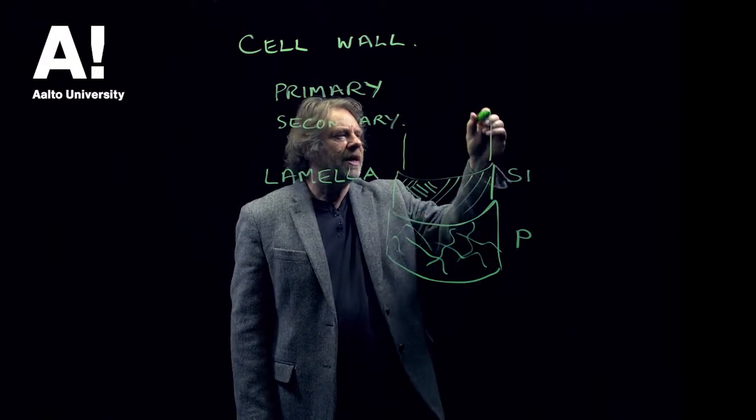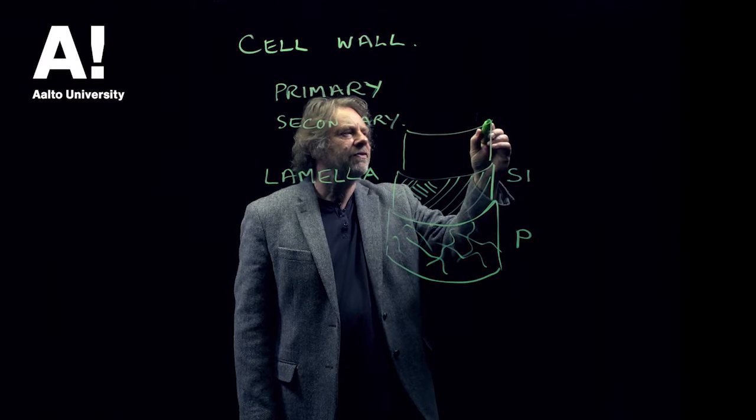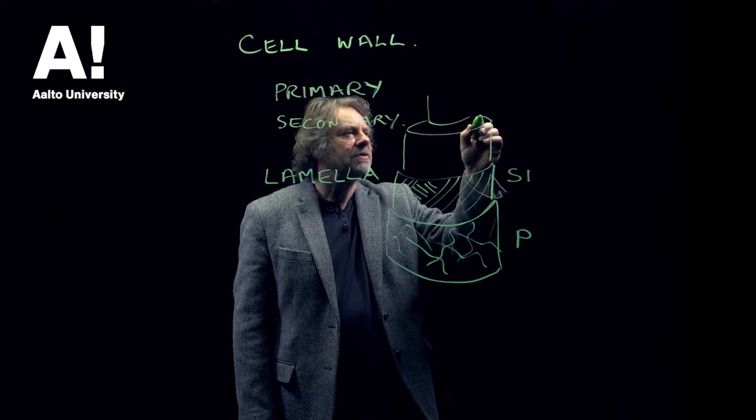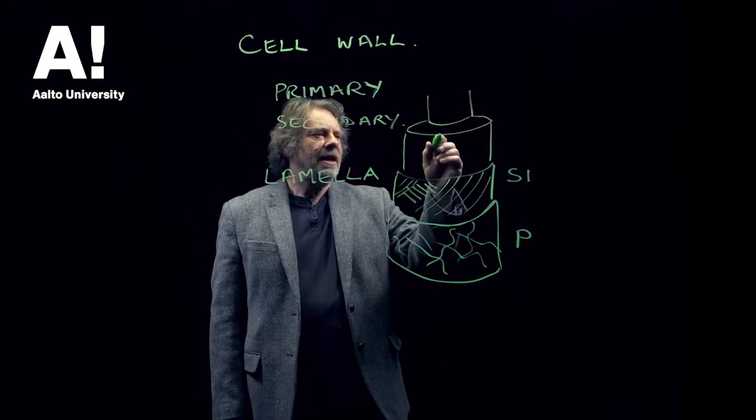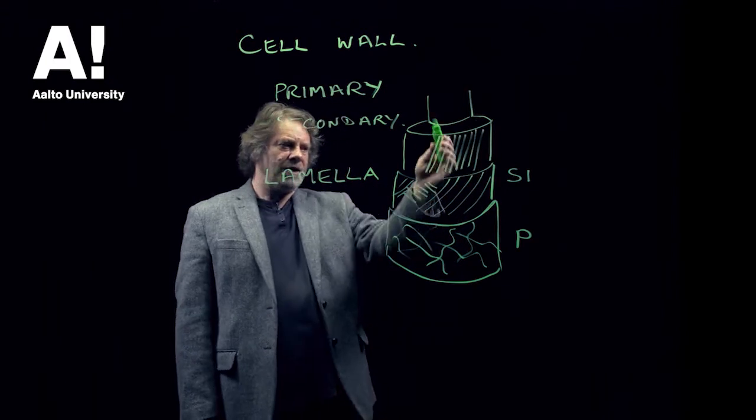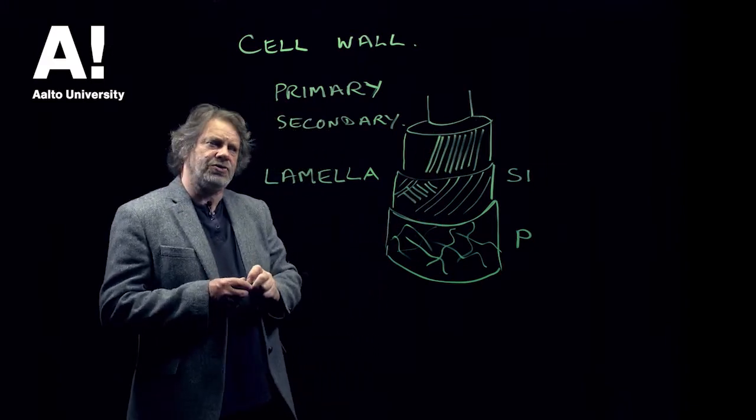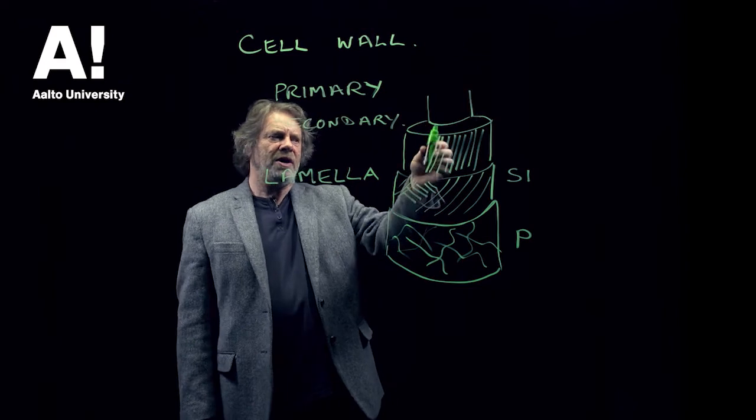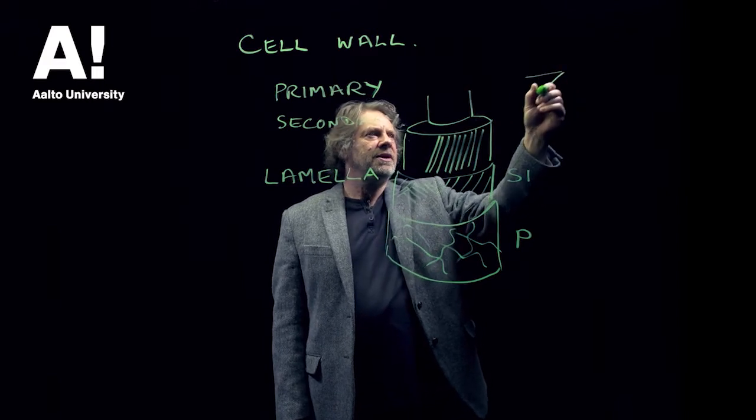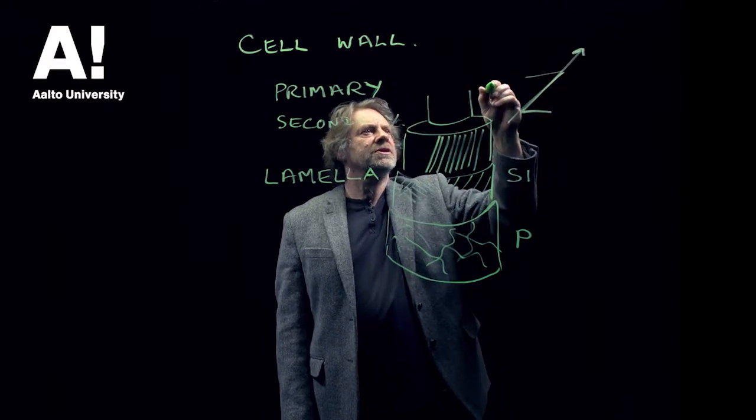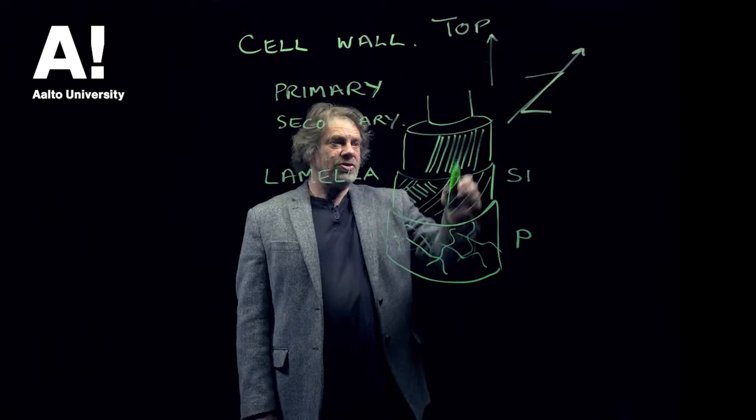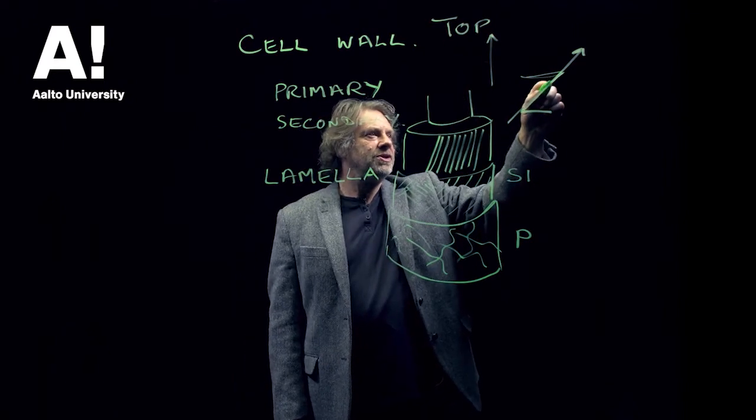Then we have an S2 layer, which is the thickest layer of all of them. There's another layer on the inside which we'll draw in a minute. And this has the microfibrillar orientation quite often at quite a steep angle, so it's quite a strong layer in tension. And all the microfibrils are laid down with one particular orientation, and that orientation can either be a Z orientation, so that's a Z direction, that's the cell wall axis, so that's the top of the tree there, so that's a Z orientation there.